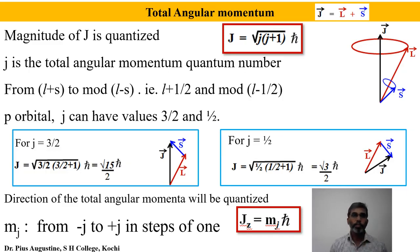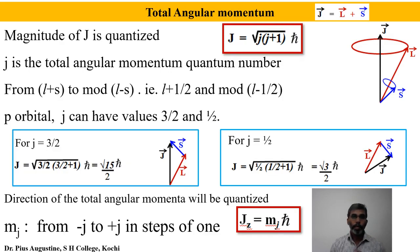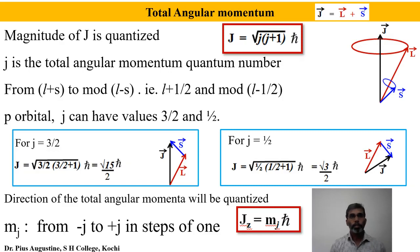The direction of total angular momentum is also quantized through J_z = m_j ħ, where m_j takes values from −j to +j in steps of 1. For j = ½, m_j = +½ and −½. For j = 3/2, m_j = −3/2, −½, +½, and +3/2. The total angular momentum vector precesses about the z axis, with the z-component satisfying J_z = m_j ħ and the magnitude satisfying J = √(j(j+1)) ħ. This is how space quantization is described in the Vector Atom Model.